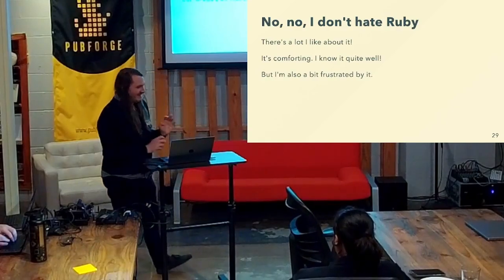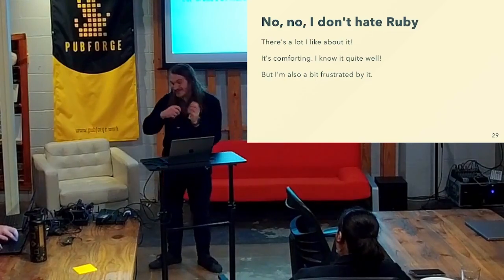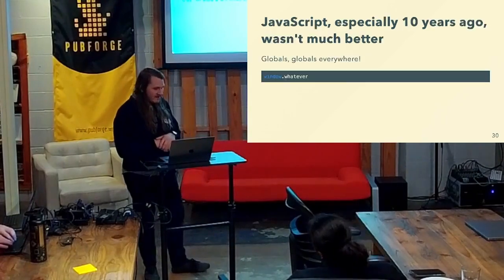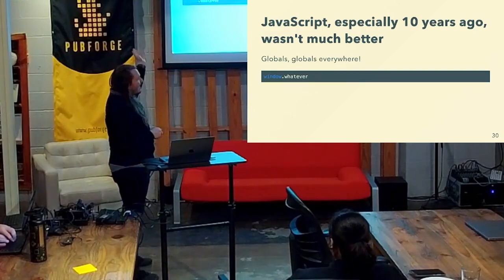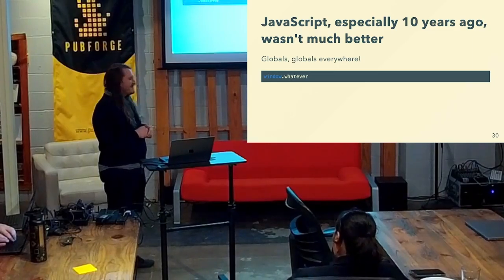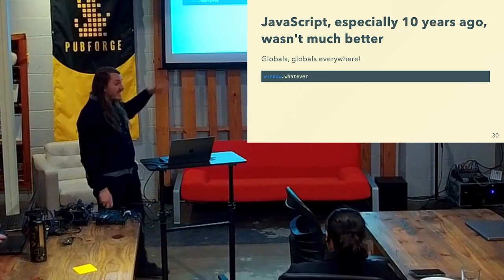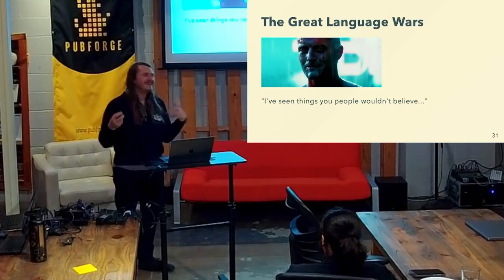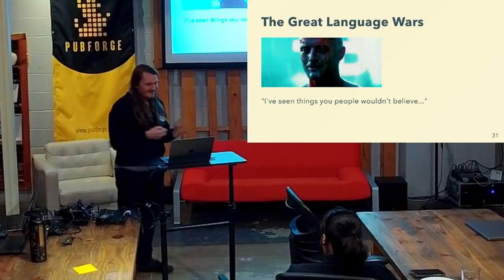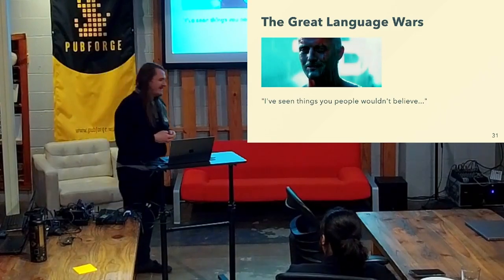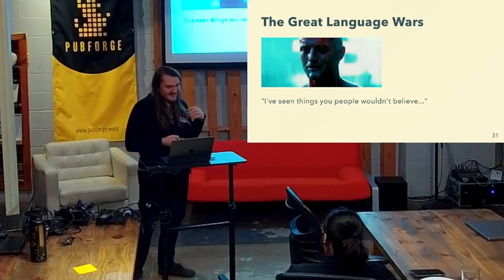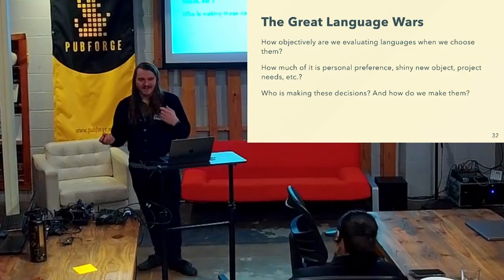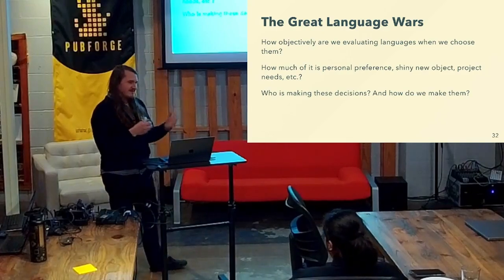I don't hate Ruby — that's the thing. It's really comfortable. I can just open up a file in Ruby and write a bunch of code without having to look anything up. But I'm also frustrated by it. And JavaScript wasn't much better ten years ago — everything was just global, especially in the browser. People used Backbone, Marionette, and jQuery. It was pretty rough. But JavaScript has innovated a lot in a way that Ruby hasn't. And something I've been thinking about while preparing this talk is: how do we choose languages? Who's choosing them and why? Who's evaluating them, upon what criteria, and are we being intentional about it?